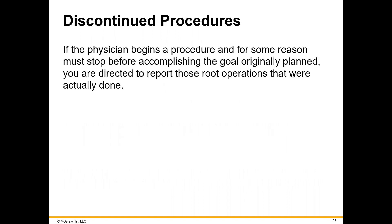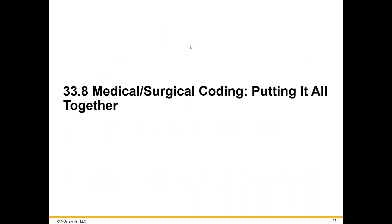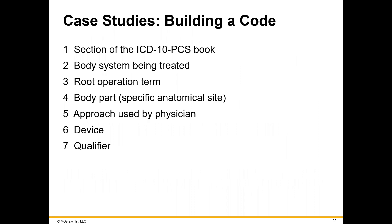If a procedure is discontinued for some reason and it has to stop, you're directed to report only those root operations that were actually done. So as we look through the PCS book, we have to look at the body system being treated, the root operation term as the third character, the fourth character meaning the specific anatomical site — realizing that sometimes they don't have an exact match — and we have to look at the approach, the device, and the qualifier.